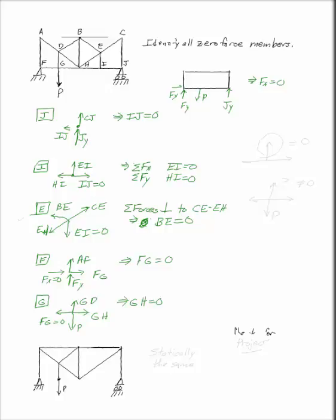So I found one, two, three, four, five, six of my members in this truss are zero force members. This is equivalent to, statically, this picture I've got here at the bottom. This is statically the same.